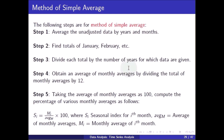The following steps are for the method of simple average. Step 1: average the unadjusted data by years and months — find the total of January, February, etc. Step 2: divide each total by the number of years for which data are given. Step 3: obtain an average of monthly averages by dividing the total of monthly averages by 12.